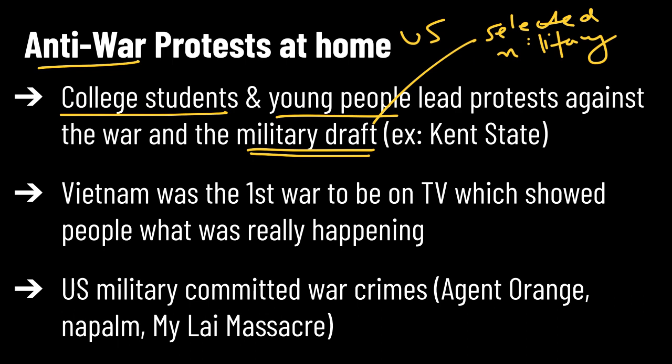These protests sometimes even got violent. Kent State is an example of a protest where the National Guard in Ohio broke up the protest and started firing — they started shooting. They killed four people; they killed four kids. So this is a very emotional time period.